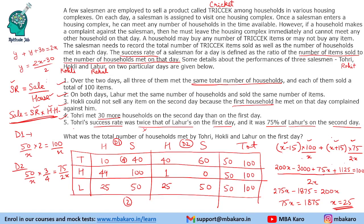The first question asks for the total number of households met by Tohuri, Hockley, and Lahur on the first day. On Day 1, they meet 10 plus 49 plus 25, which is 35 plus 49, giving 84 households on the first day.